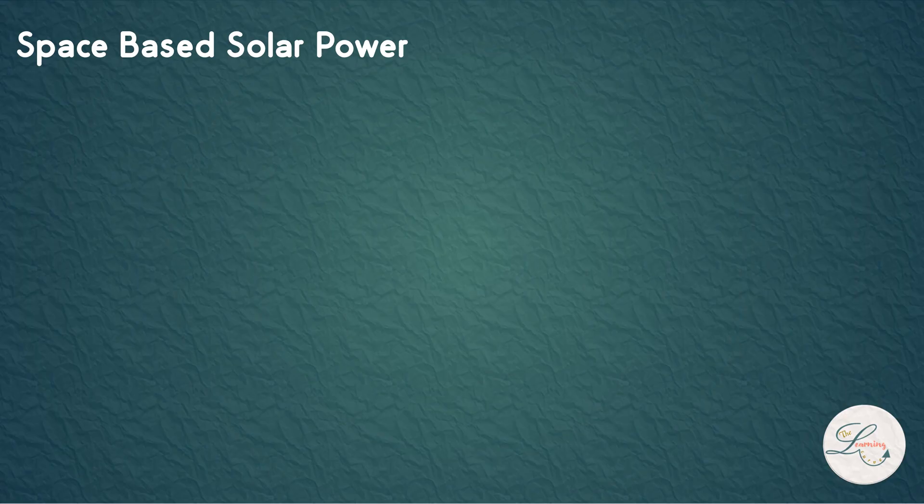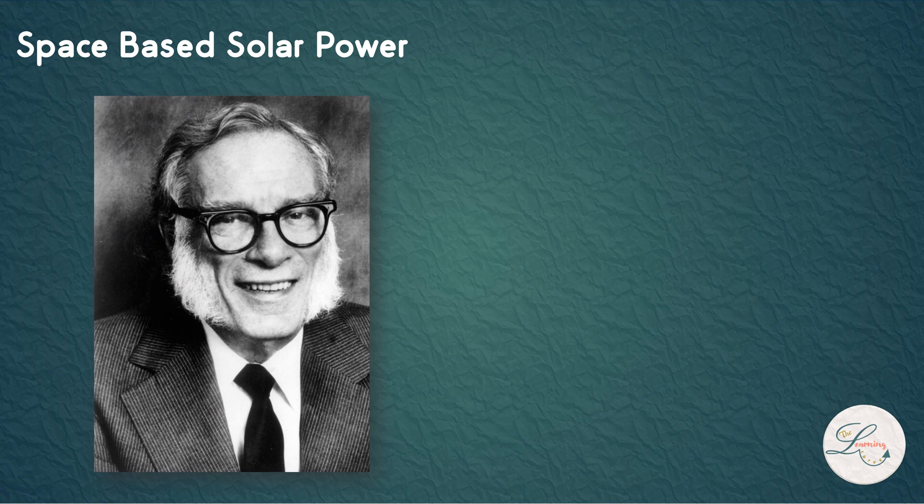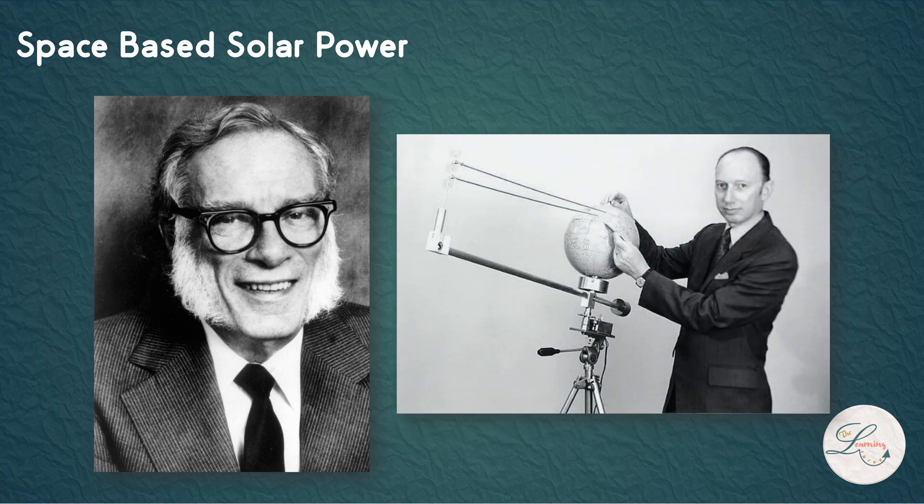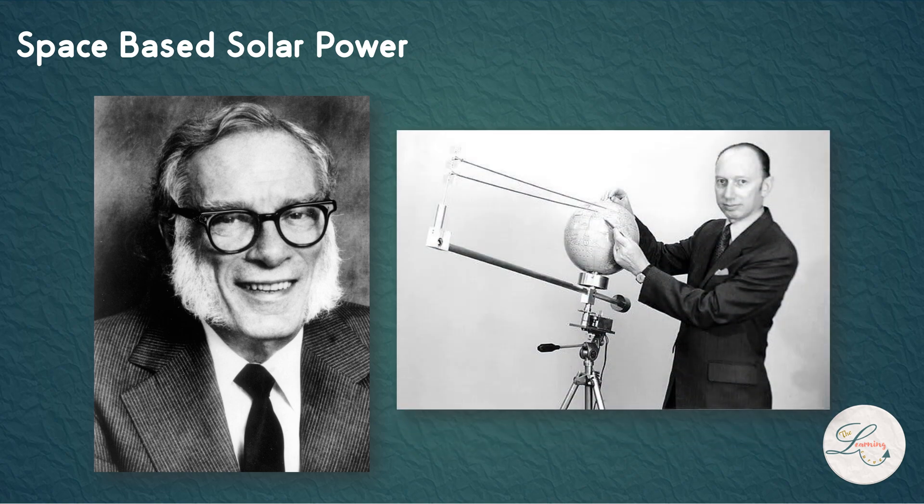The idea of collecting solar power in space was popularized by science fiction author Isaac Asimov in 1941 in his short story. In 1968, American aerospace engineer Peter Glaser wrote the first formal proposal for a solar-based energy system in space.